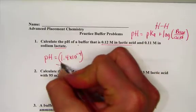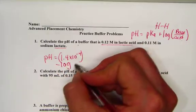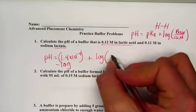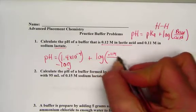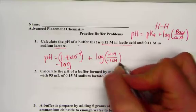We need to take the negative log of the pKa, negative log of Ka to turn it into pKa, and we'll add that to the log of the ratio of the base, 0.11 molar lactate, over its conjugate acid, 0.12 molar lactic acid.